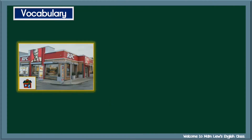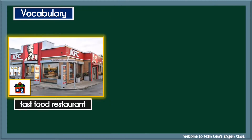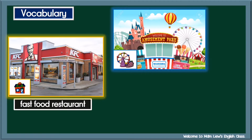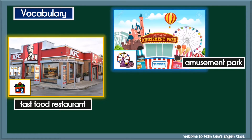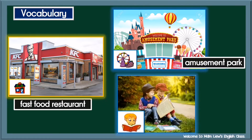Four: fast food restaurant — restoran makanan segera. Five: amusement park — taman hiburan — amusement park. Six: interesting — menarik — interesting.